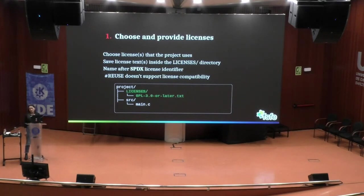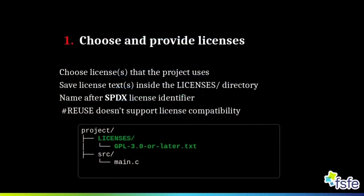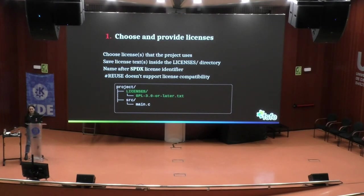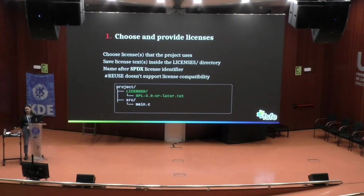We recommend using already well-known and often-used licenses. We're going to save the text of the license in a file, and store it in a directory named 'licenses' — this is one of the first features of REUSE. All licenses are stored there, and we're going to name this text file after the SPDX license identifier. Here we're making use of existing practices. So our project is going to have the licenses directory, with the text file named after the SPDX license identifier.